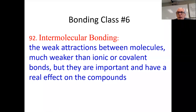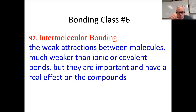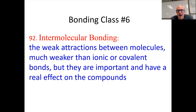Okay, kids, Charlie Busso here. This is the very end — the last two pages of the notes. We'll do them all in one shot. We're going to start with number 92. All the bonding we've done before — ionic, covalent, and metallic — those are all really strong bonds in chemistry.